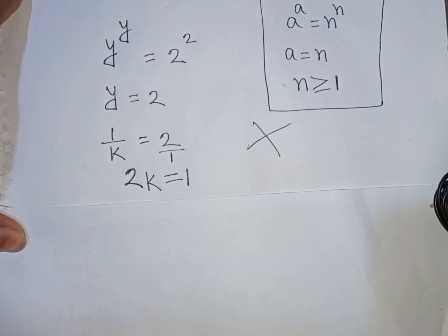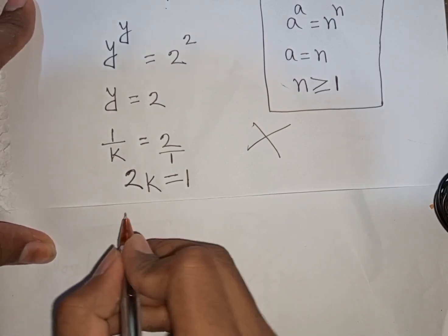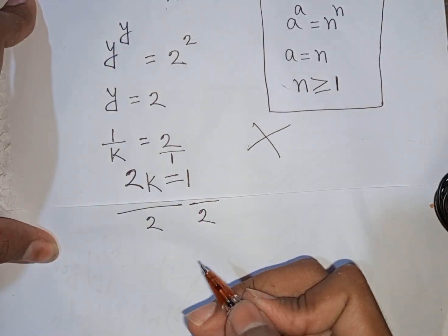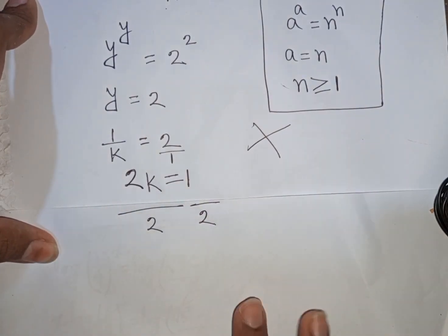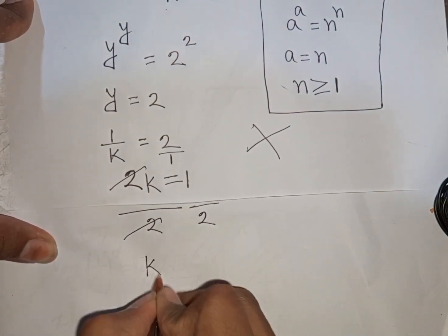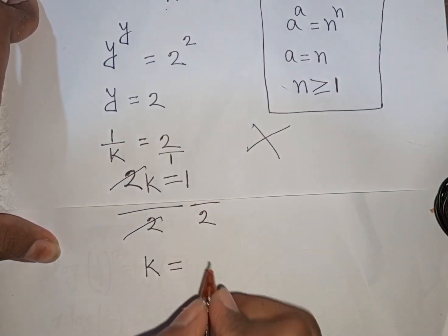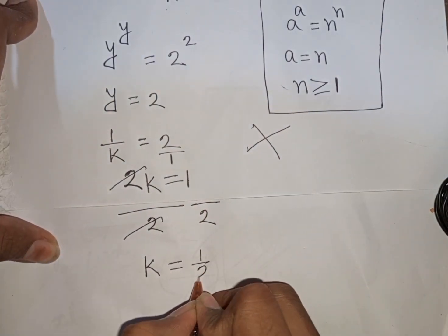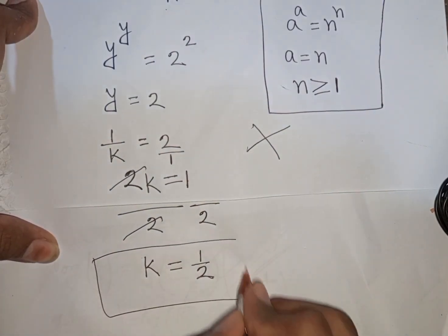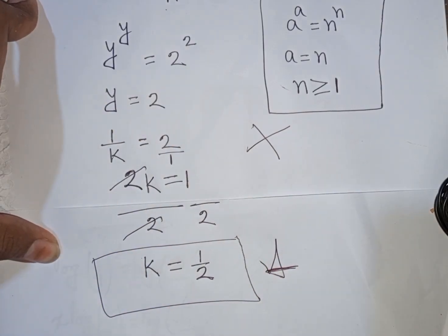Now we need the value of k, so we divide by 2 on both sides. This 2 will be cancelled, so we have k will be equal to 1 by 2. So 1 by 2 is the value of k — this is our final answer.